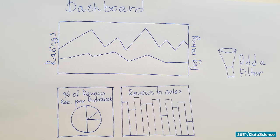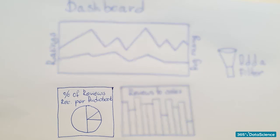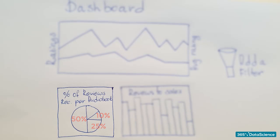Then we would like to create a pie chart showing us the percentage of reviews each audiobook obtained. For example, 50% audiobook 1, 25% audiobook 2, 10% audiobook 3, and so on.